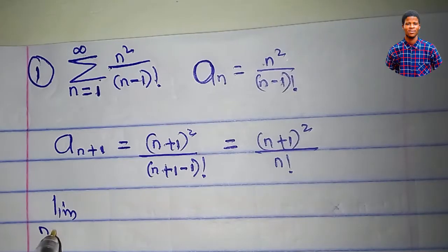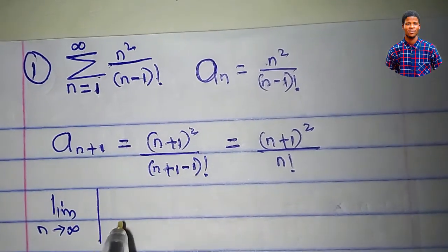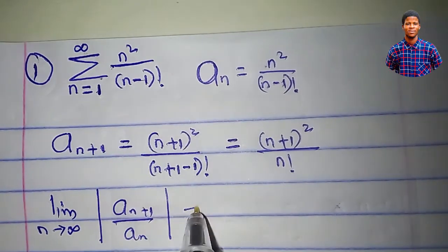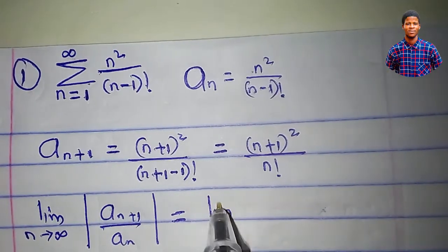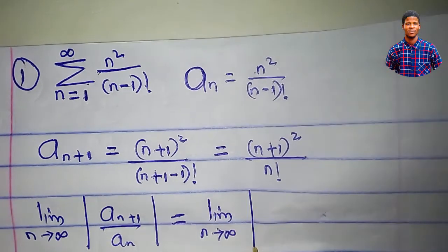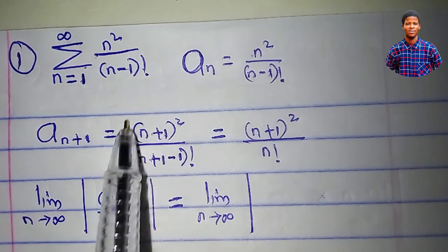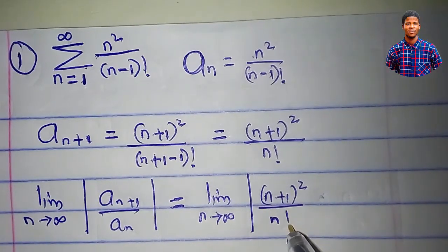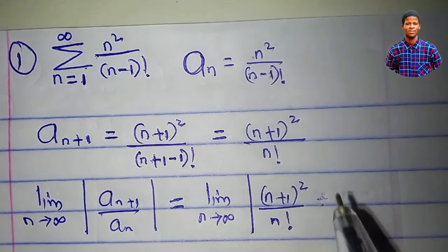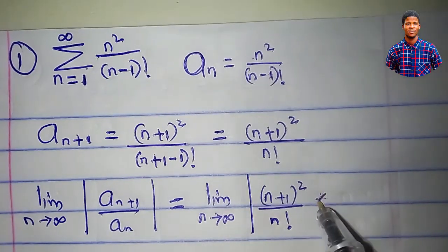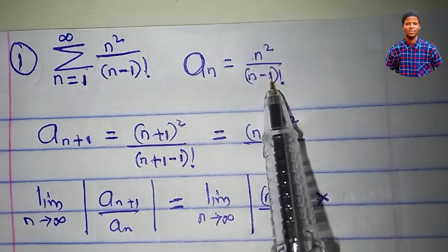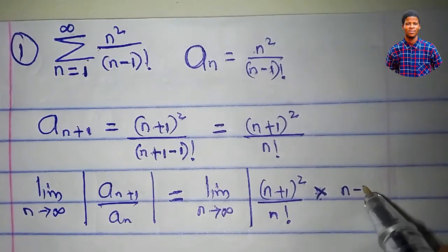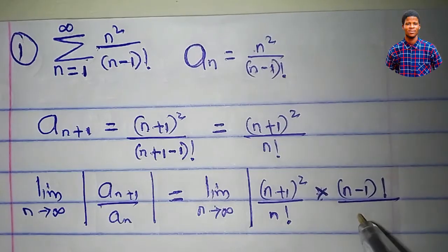Let's determine the limit as n approaches infinity of the modulus of a sub n plus 1 all over a sub n. This equals the limit as n approaches infinity of n plus 1 squared over n factorial, times the reciprocal of a sub n, which gives us n minus 1 factorial all over n squared.